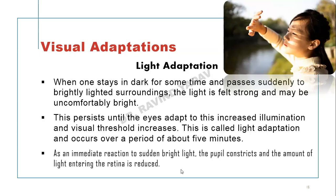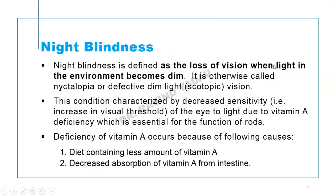Immediately, as a reflex process, we bring our hand near our eyes so that the light rays can be adjusted and we get adapted to the new brightness level. Now, if either of these adaptation mechanisms gets hampered, there would be a resultant condition called night blindness.